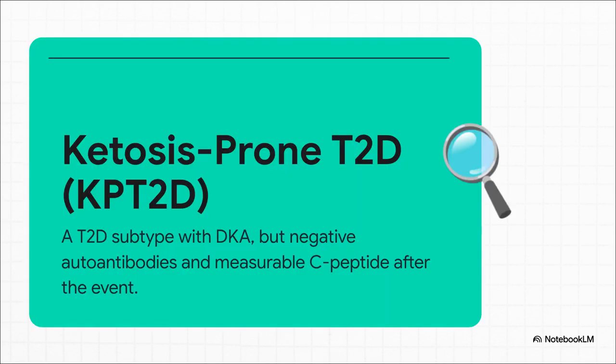One major possibility you need to have on your radar is ketosis-prone type 2 diabetes, or KPT2D. These patients can look exactly like type 1 when they're admitted. The key difference is no autoantibodies, and this is crucial: they actually recover their C-peptide secretion once you get them through that metabolic crisis. Their beta cells were just severely stressed, not destroyed.